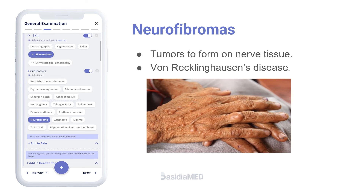Neurofibromatoses are a group of genetic disorders that cause tumors to form on nerve tissue. They are associated with von Recklinghausen's disease.